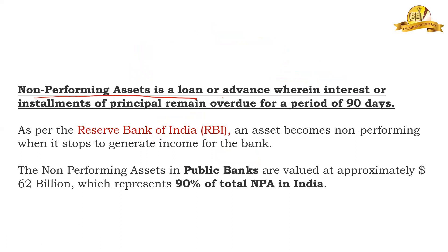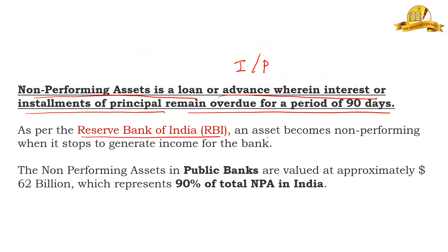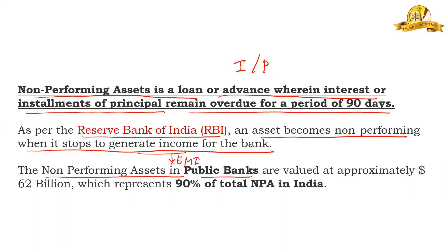NPA is a non-performing asset — a loan or advance where interest or installments of principal remain overdue for a period of 90 days. As per the Reserve Bank of India, an asset becomes non-performing when it stops generating income for the bank.